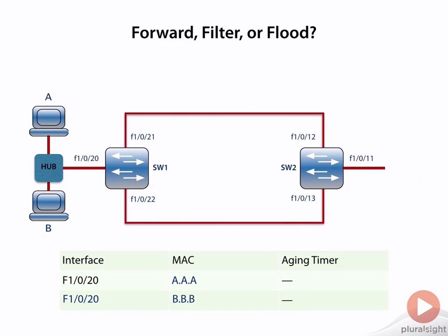In this example, things have changed just a little bit. Now we've connected a hub to f1/0/20, and you can see here that host B has moved and made a connection into that hub. So essentially, they're on the same segment as A.